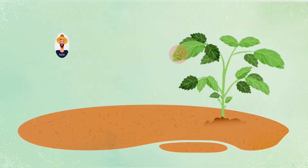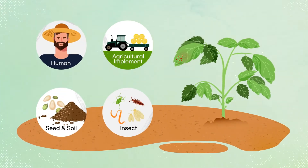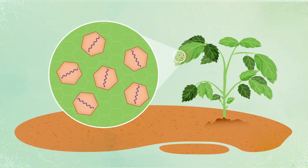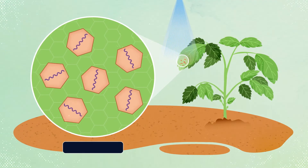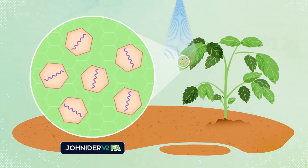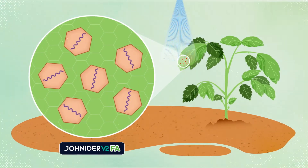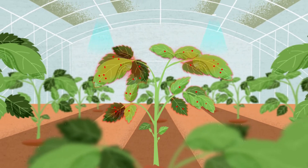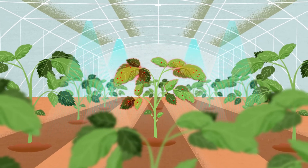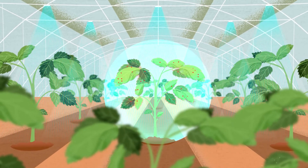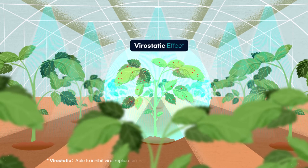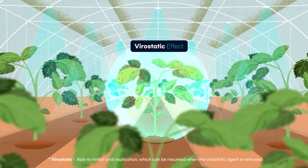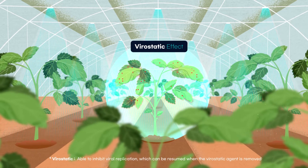Joneter V2 FA is a product to inhibit the systemic infection of crops which had been locally infected by various vectors, and suppress the virus dissemination of spreading infection from infected crop to healthy crop. If crops are infected with viruses in the cultivation plot, just spray Joneter V2 FA. Joneter V2 FA penetrates into plants and inhibits virus dissemination with virus static activities to suppress viral activities.